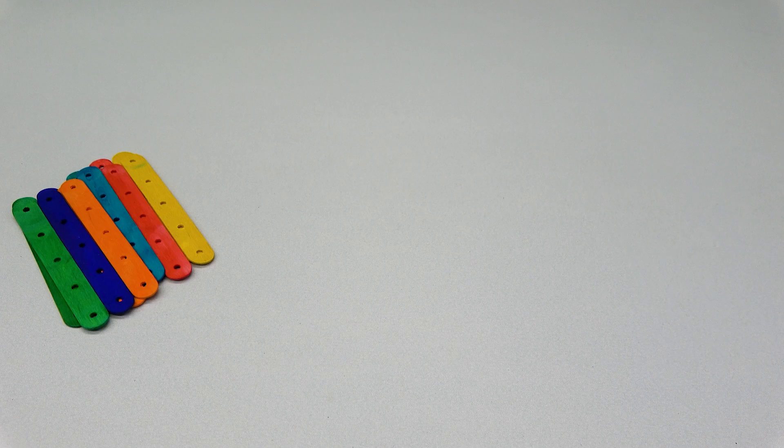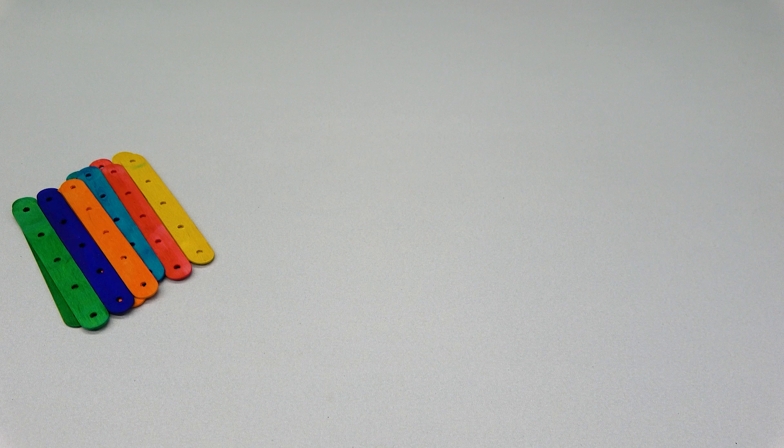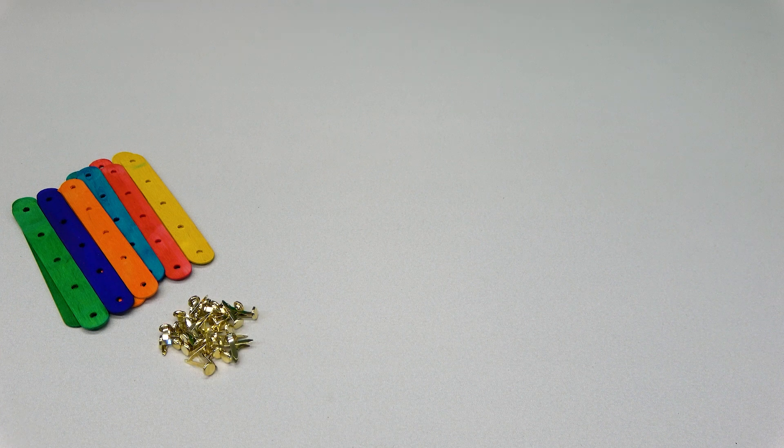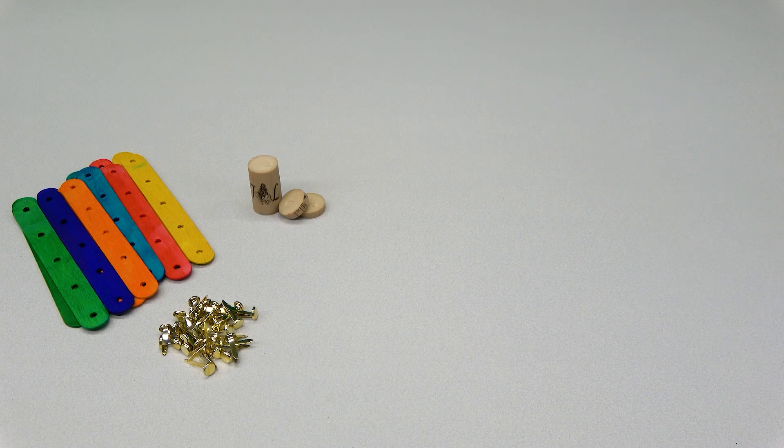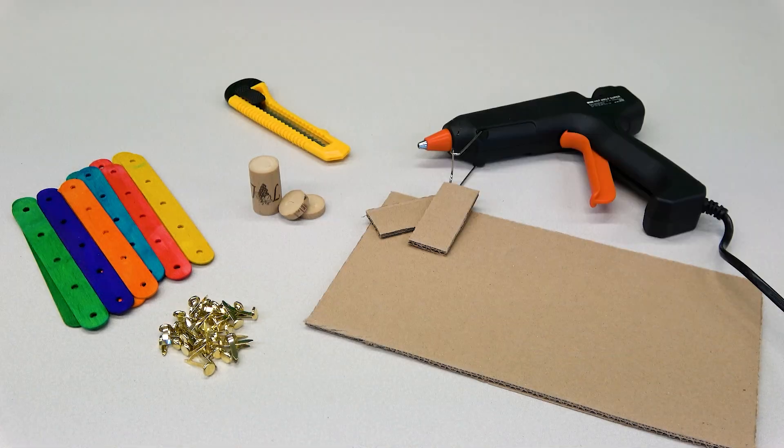For this activity you will need popsicle sticks with holes, or you can use a hole puncher to create holes in the sticks, split pin paper fasteners, a cork, cardboard, a cutter, and a hot glue gun.